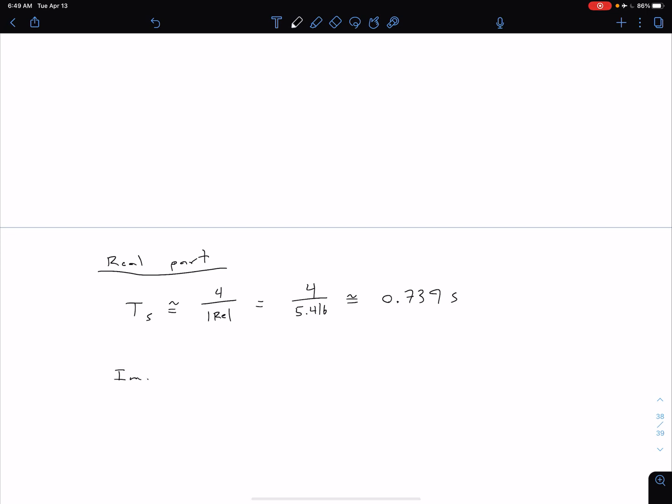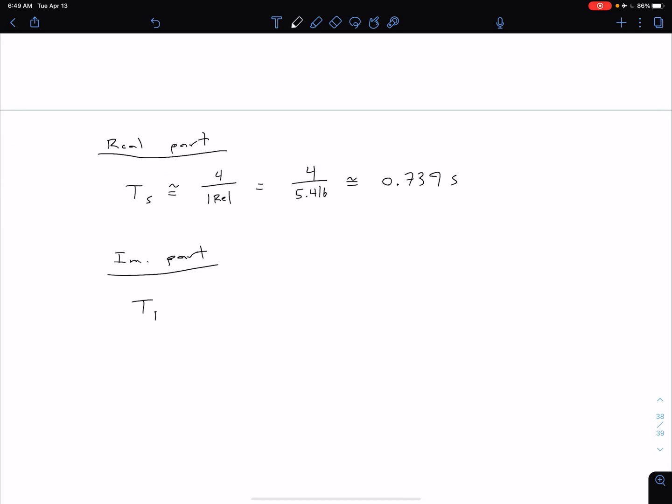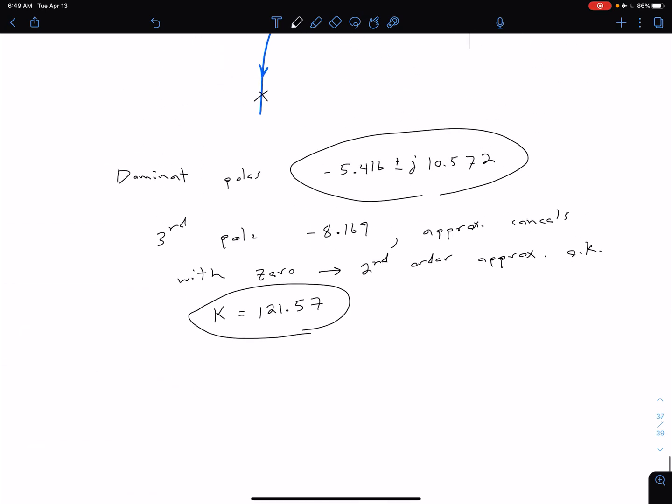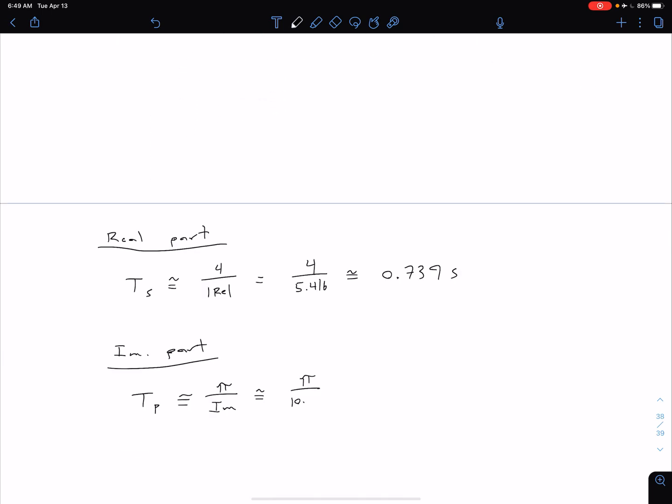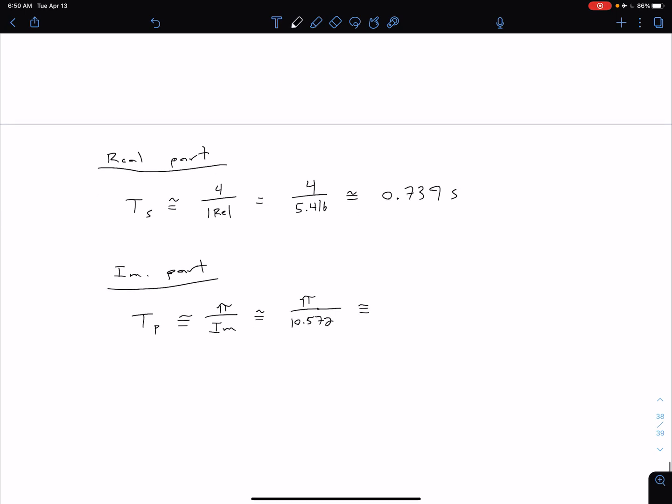Okay. And then from the imaginary part, I can get peak time information. So our peak time T sub P is approximately equal to pi divided by the imaginary part of our dominant pole. And so that's going to be approximately pi divided by, and up here we see we had for our imaginary part, 10.572. So let's put 10.572 there. Evaluating that, we get a peak time of approximately 0.297 seconds. Okay. So that's going to be of interest here in a second, because of course, that's what we want to adjust.